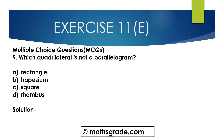Now question number 9, multiple choice: which quadrilateral is not a parallelogram? Options are rectangle, trapezium, square, and rhombus. A rectangle is a parallelogram, a square is also a parallelogram, a rhombus is also a parallelogram, but a trapezium is not a parallelogram. So option B, trapezium, is the answer.